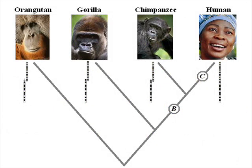Inversion event A is harder to place. It could be either on the line leading to modern orangutans, or on the line leading to the other great apes before the divergence of the gorilla. In either case, the result is the same.